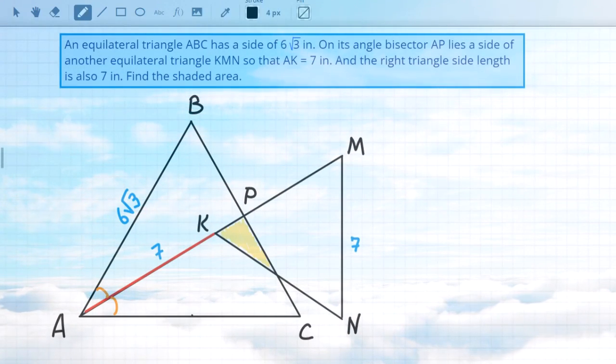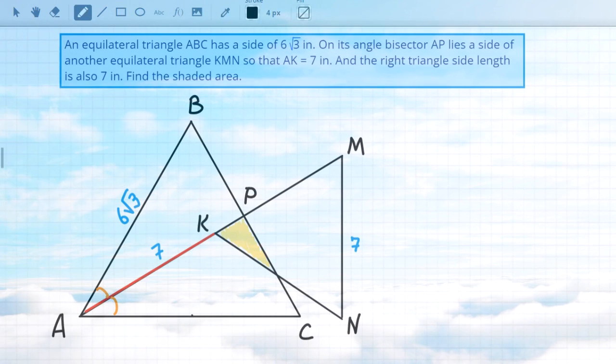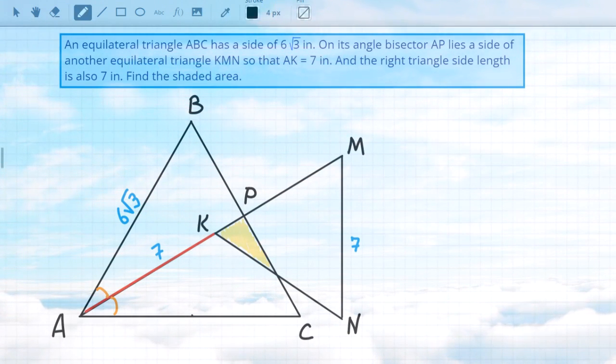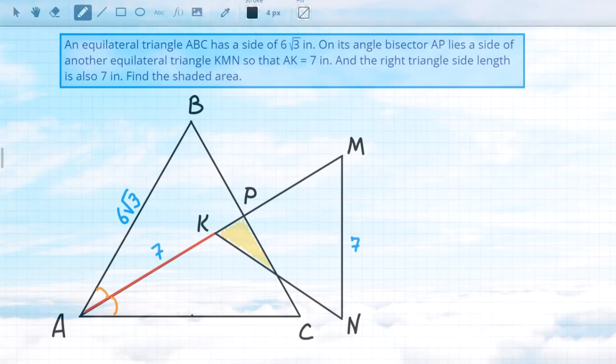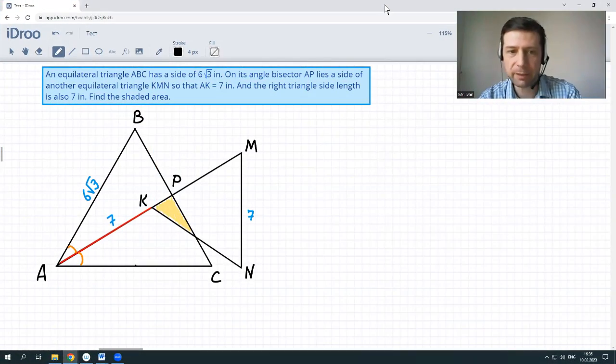An equilateral triangle ABC has a side of 6√3 inches. On its angle bisector AP lies a side of another equilateral triangle KMN, so that AK is equal to 7 inches, and the right triangle side length is also 7 inches. So we have to find the shaded area, the yellowish area, KP and something.